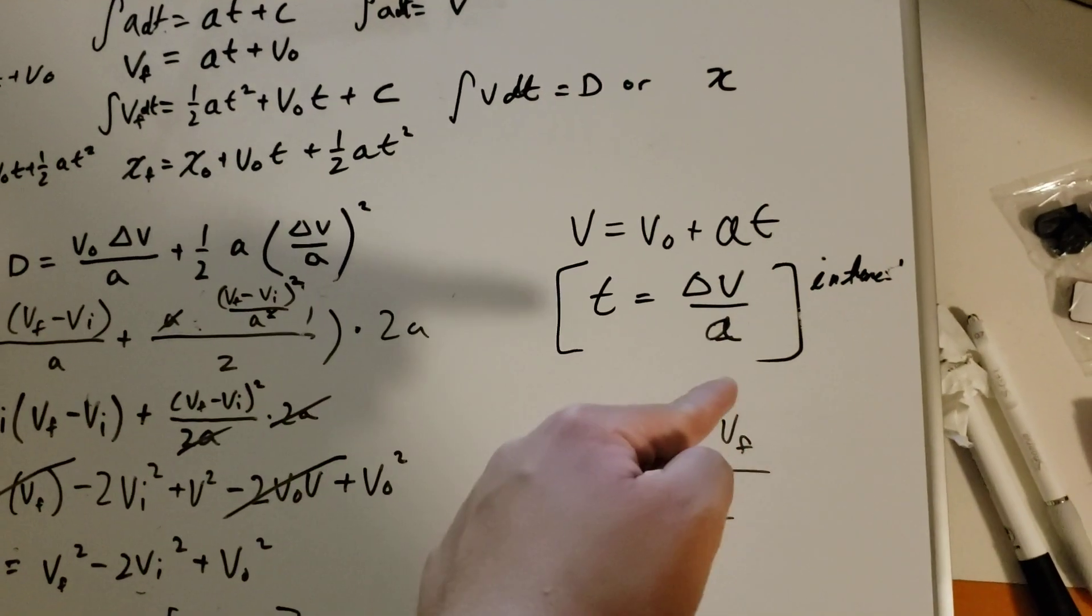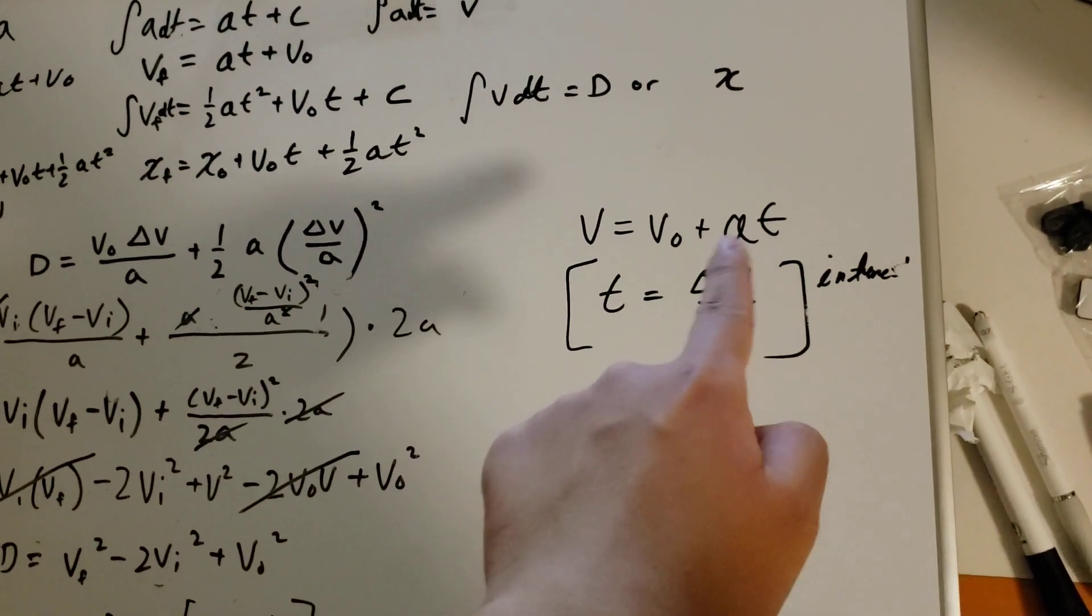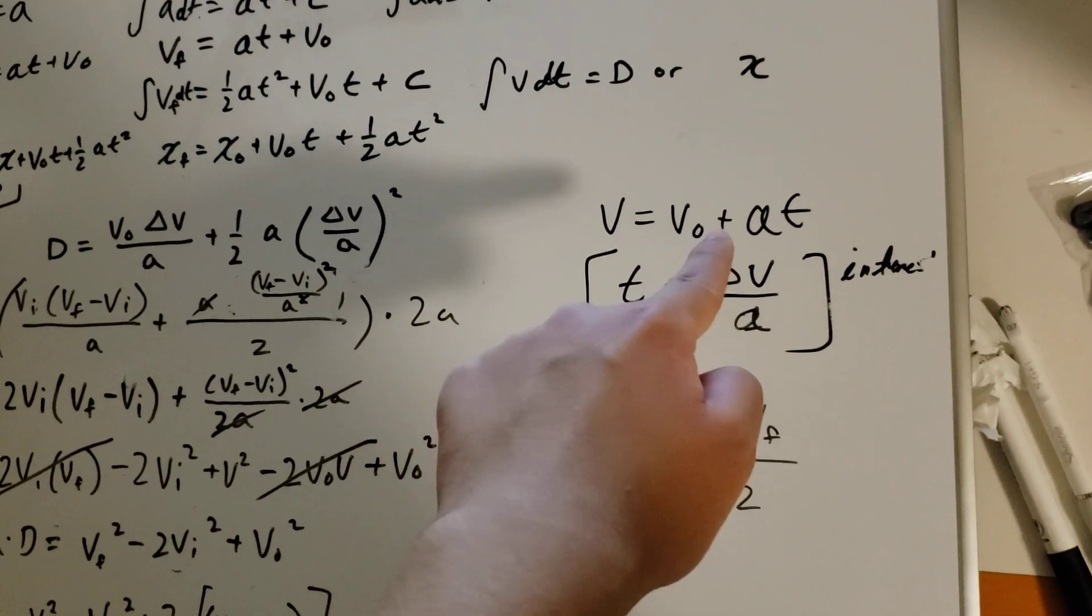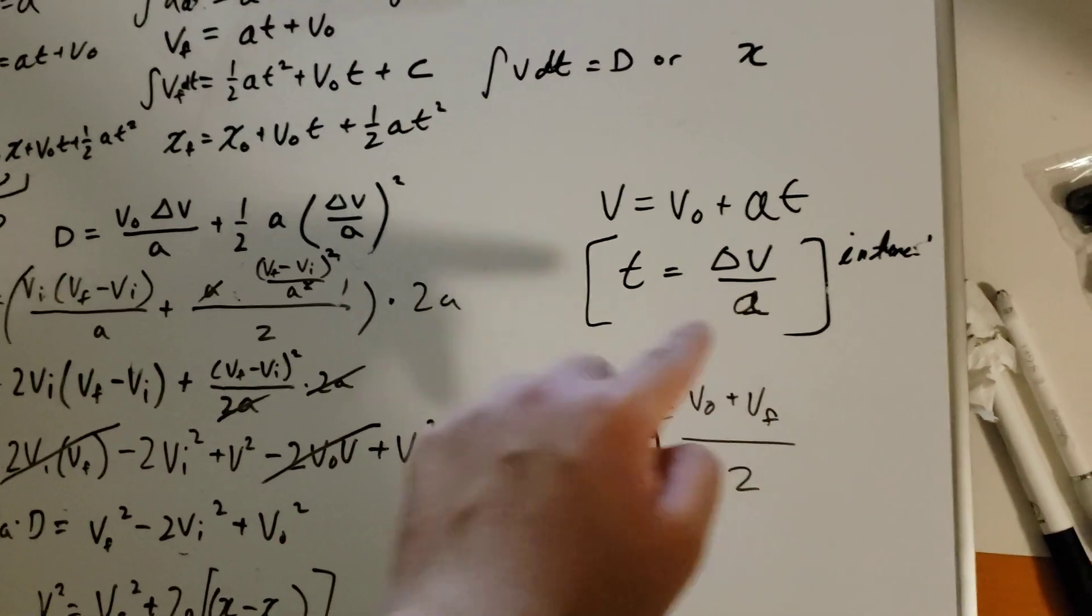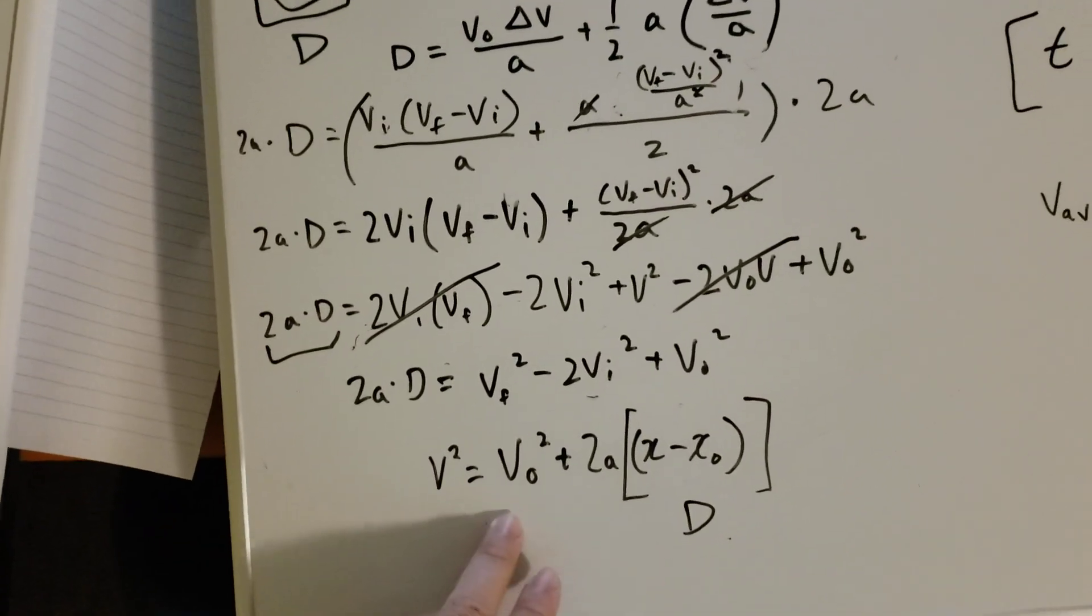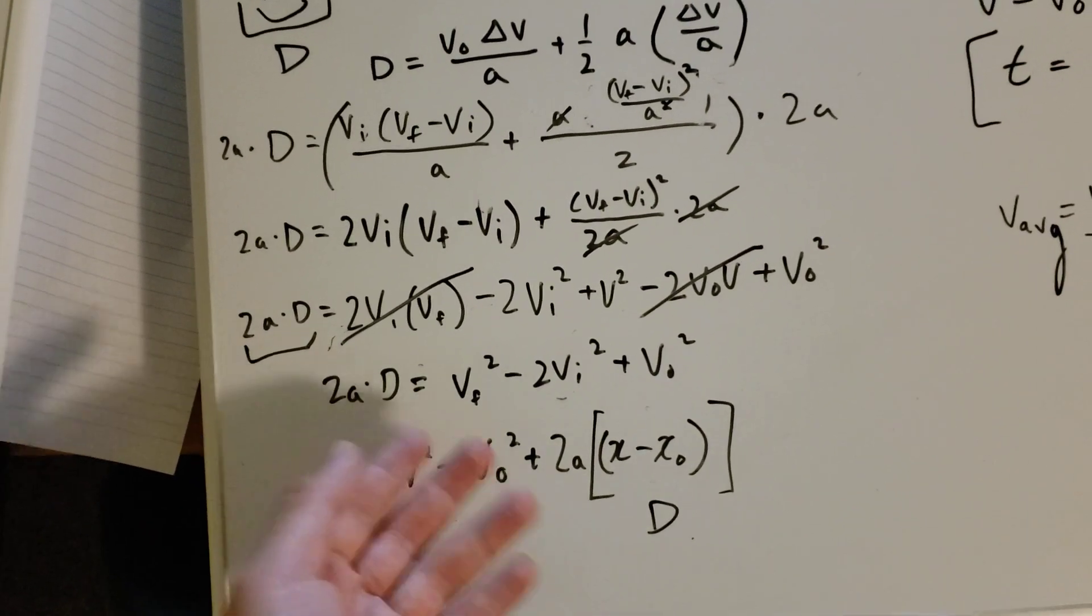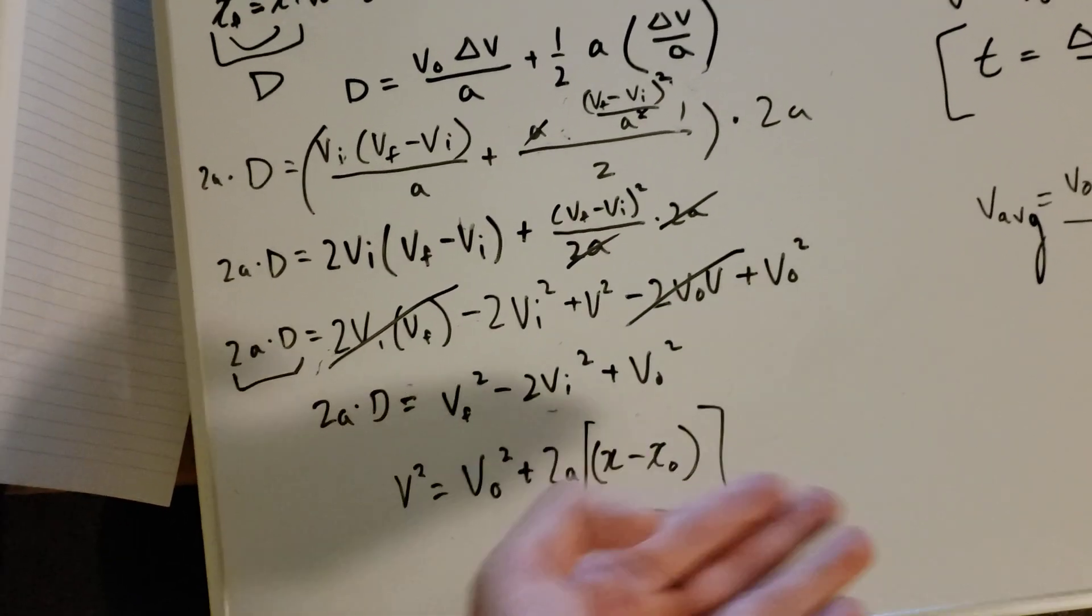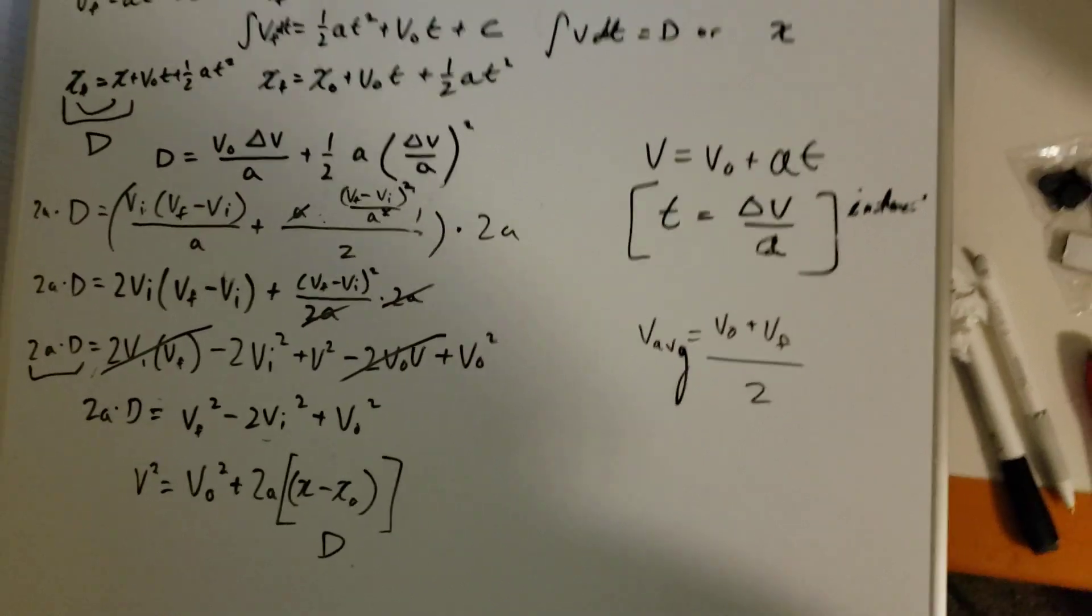If you flip this into this version over here, which is basic algebra—change in v because change in v is v final minus v initial, divided by a. Doing all the algebra gives you the third equation: v squared equals v initial squared plus 2a times d, or change in x or y, depending on the question.